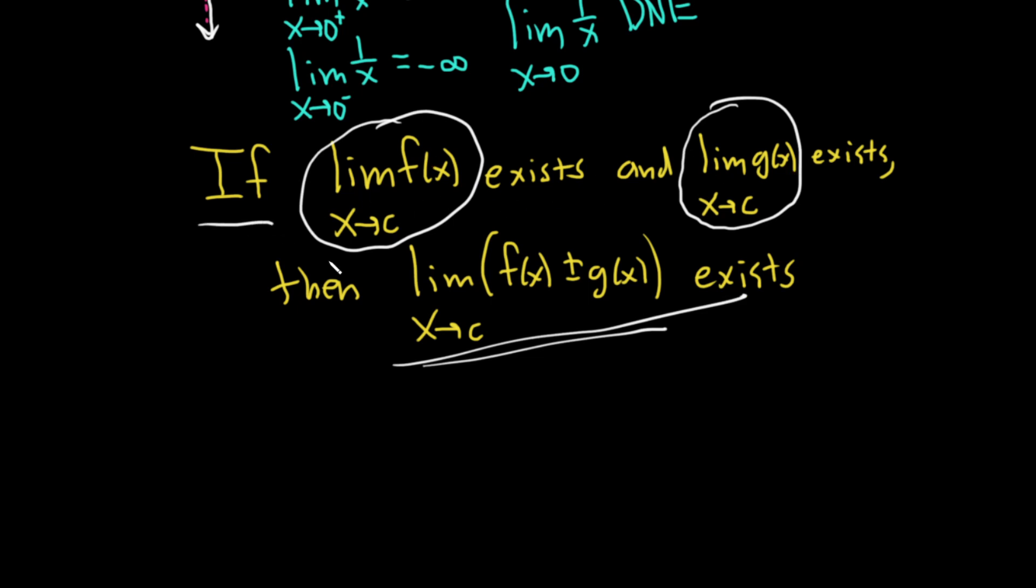This is an if-then statement so it only goes one way. Again, if the individual limits exist, then the sum and difference exists. If the sum and difference exists, it's not necessarily true that these exist.